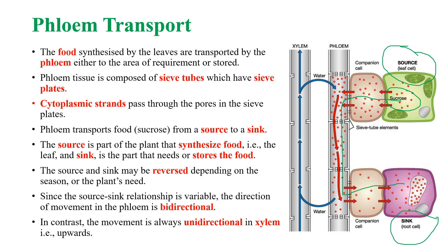Phloem transport can be bidirectional — that is, food can be transported from leaf to root as well as from root to leaf. Whereas xylem transportation is always unidirectional.